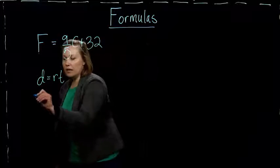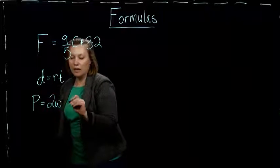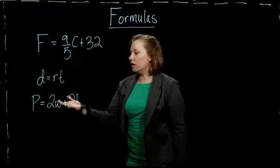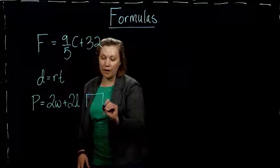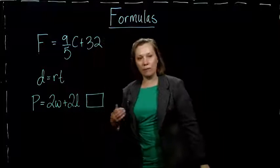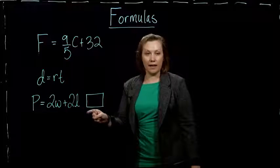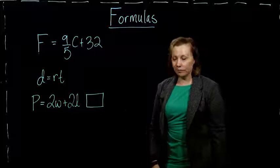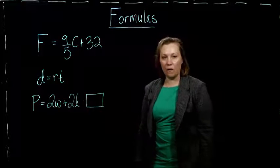Another one you could see, maybe you've seen before, P equals 2W plus 2L. So, this one is actually for, do you recognize it? Perimeter of a rectangle. The perimeter is just if we measured the distance on each side and added up all those distances, that gives us the perimeter of a rectangle. And a shortcut for that is to use this formula.